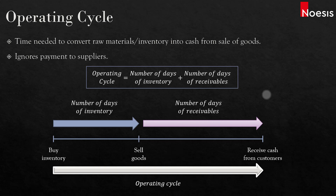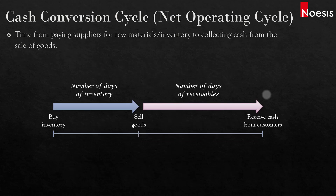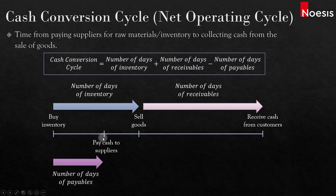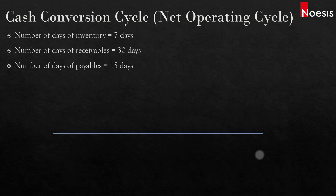We did not talk about payment to suppliers in the operating cycle. We then move on to the cash conversion cycle, or net operating cycle, which is the time from paying suppliers for raw materials or inventory to collecting cash from the sale of goods. Bringing in the payment to suppliers — which occurs some time after buying the inventory and before selling the goods — the number of days of payables covers that gap. The cash conversion cycle equals the number of days of inventory plus the number of days of receivables minus the number of days of payables.